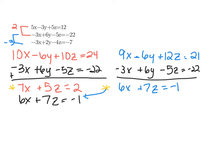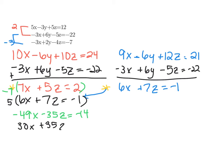I'm going to choose to eliminate my Z's. I'll multiply the top equation by negative 7, giving me negative 49X minus 35Z equals negative 14. Then I'll multiply the bottom equation by positive 5, giving me 30X plus 35Z equals negative 5. Adding these two equations together, I get negative 19X equals negative 19, which means X equals positive 1.